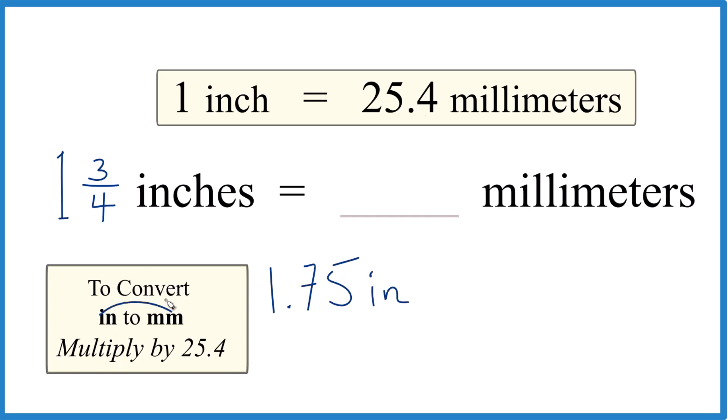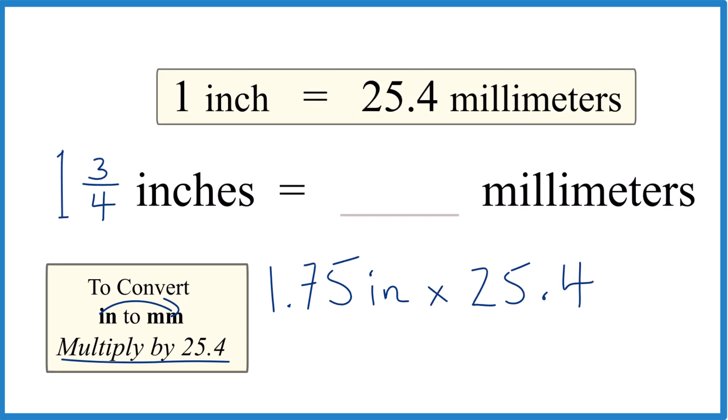When we go from inches to millimeters, we multiply by 25.4. And that's not surprising because there are 25.4 millimeters in one inch. That's even the units here, millimeters per inch.